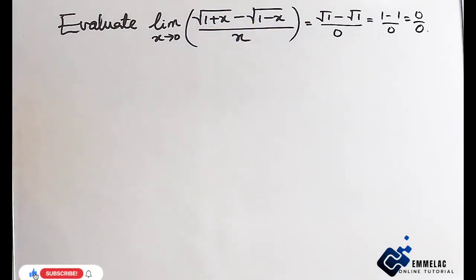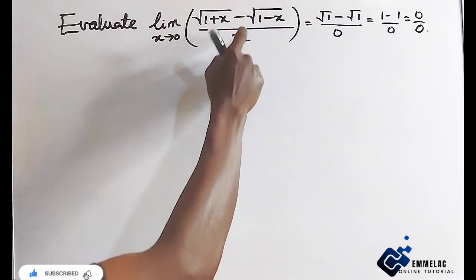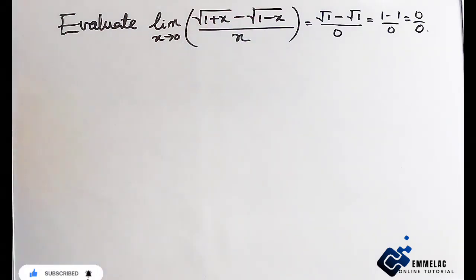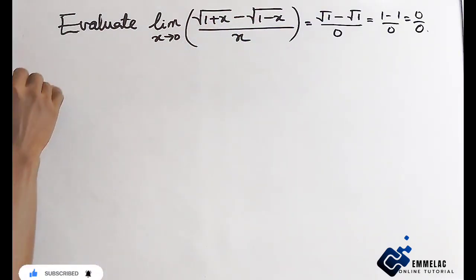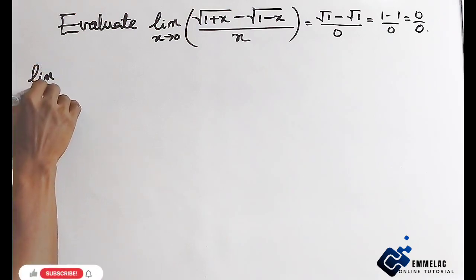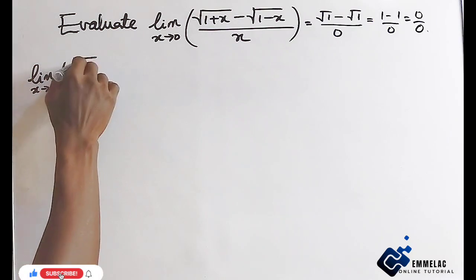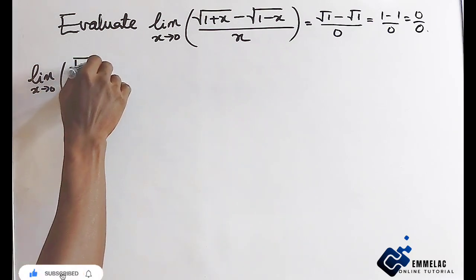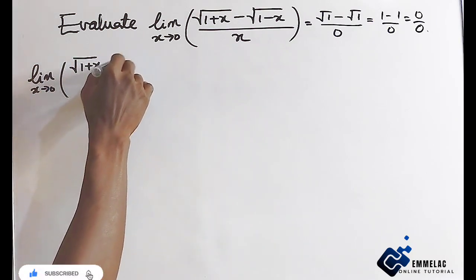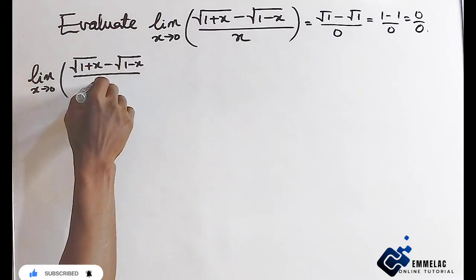What we need to do here is multiply the numerator and the denominator of this function by the conjugate of the numerator. So here we have the square root of 1 plus x minus the square root of 1 minus x, all over x.